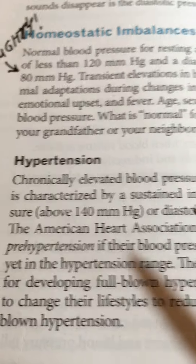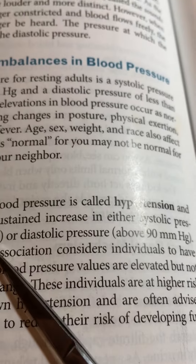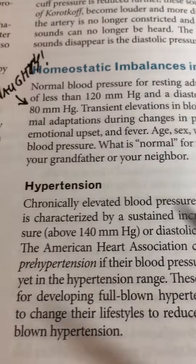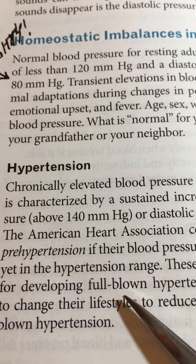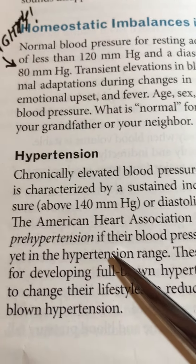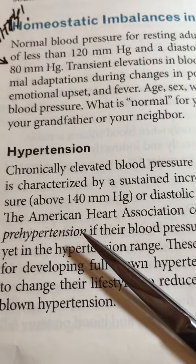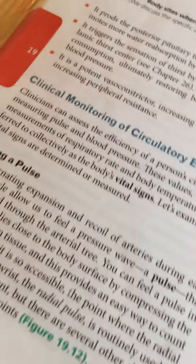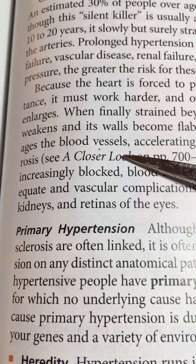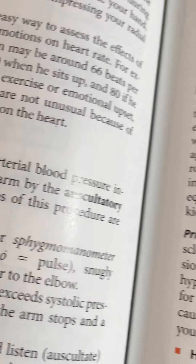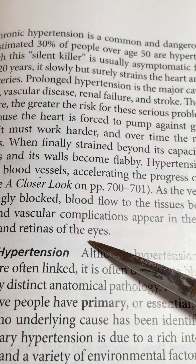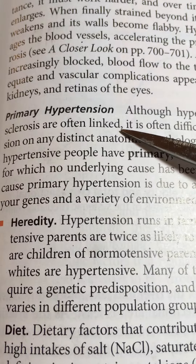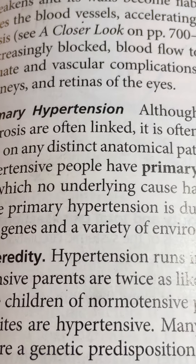Hypertension historically was defined as 140 over 90, but that's now considered old school. The new standard is that anything over 120 over 80 is considered hypertension. The next topic on page 711 is primary hypertension.